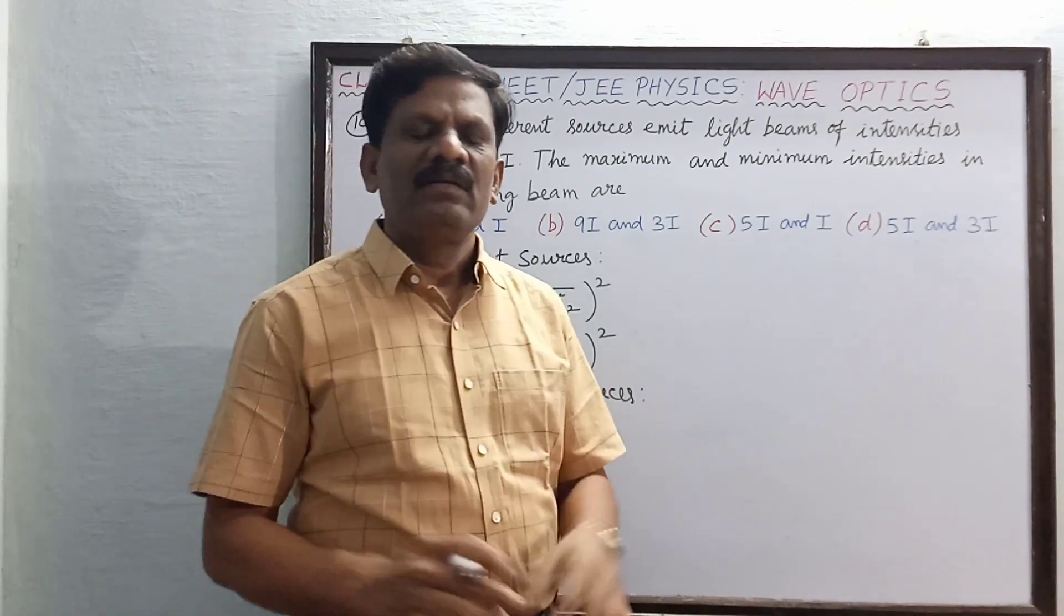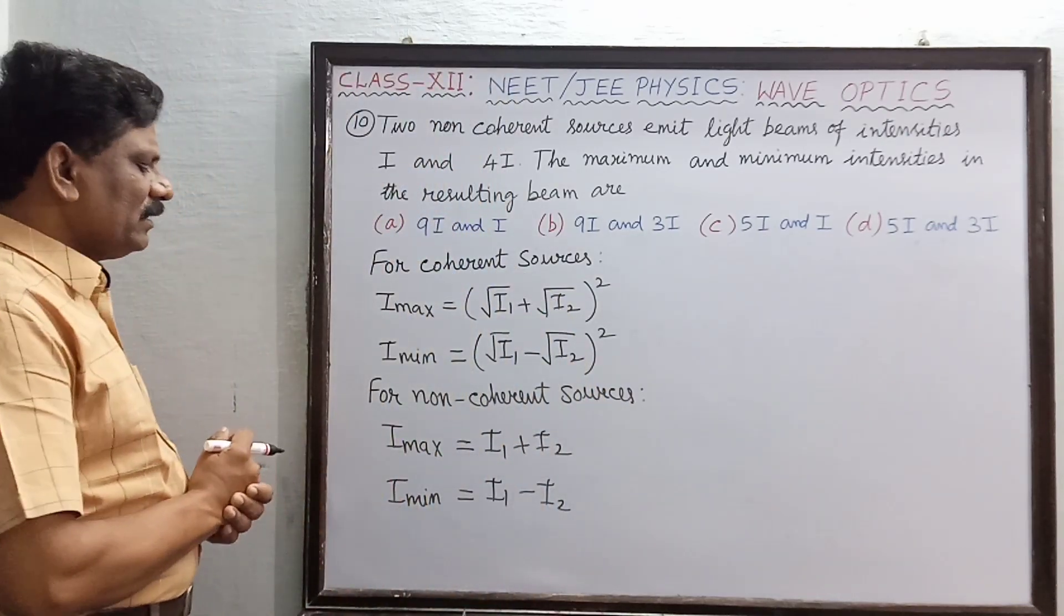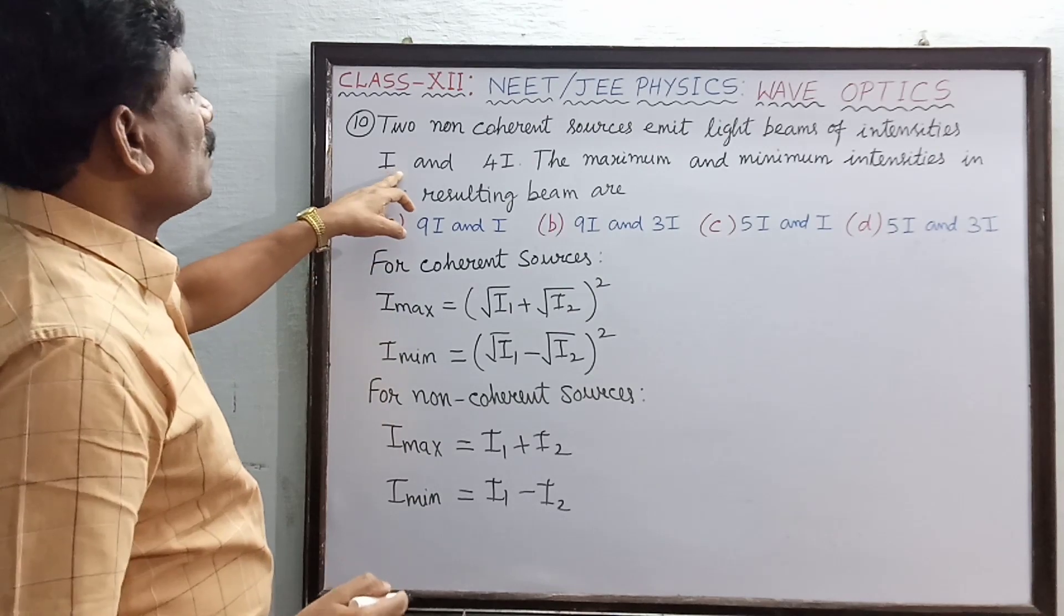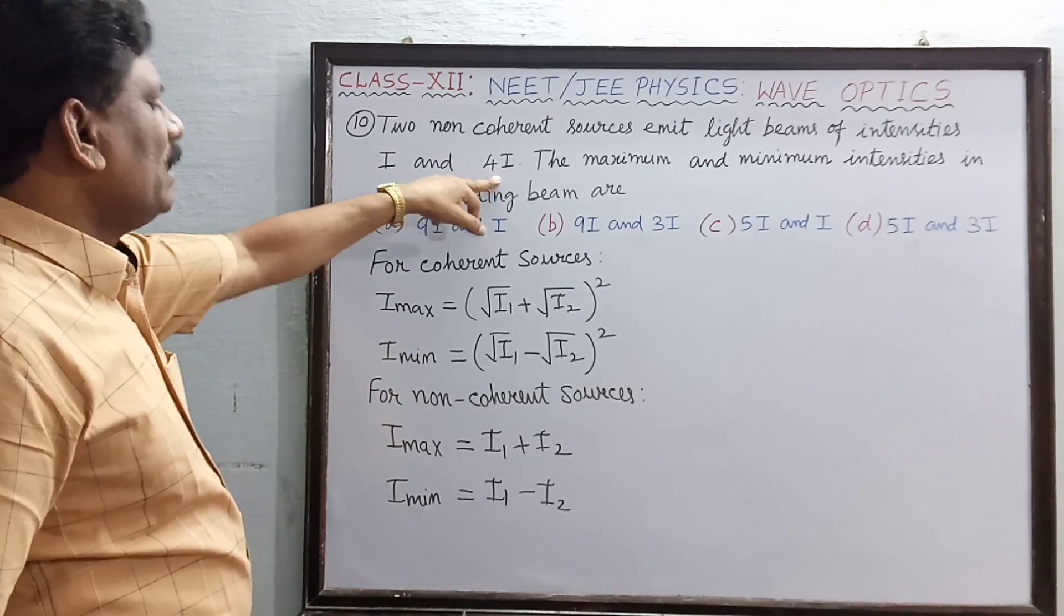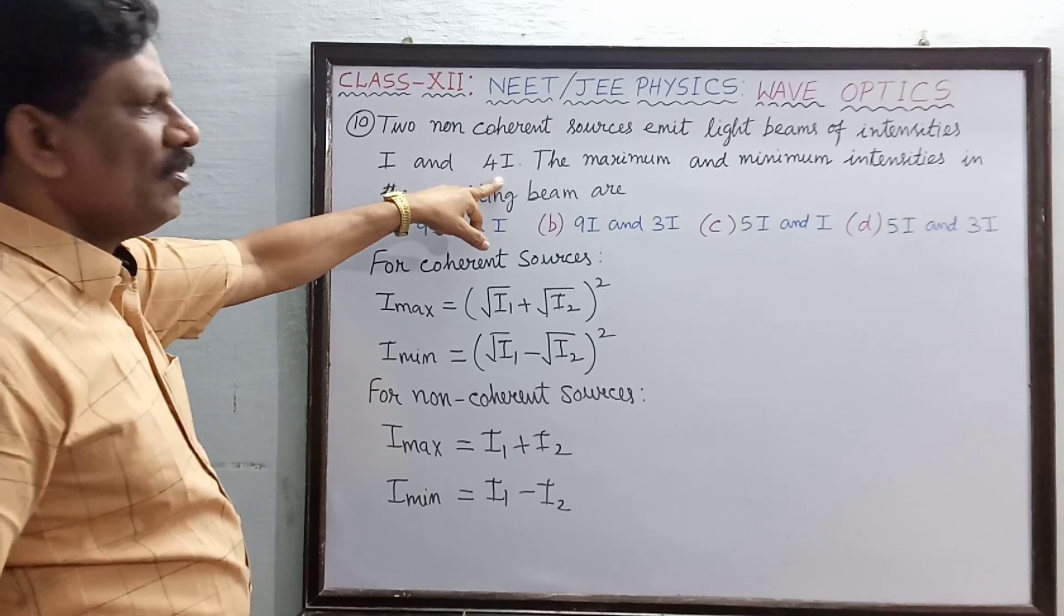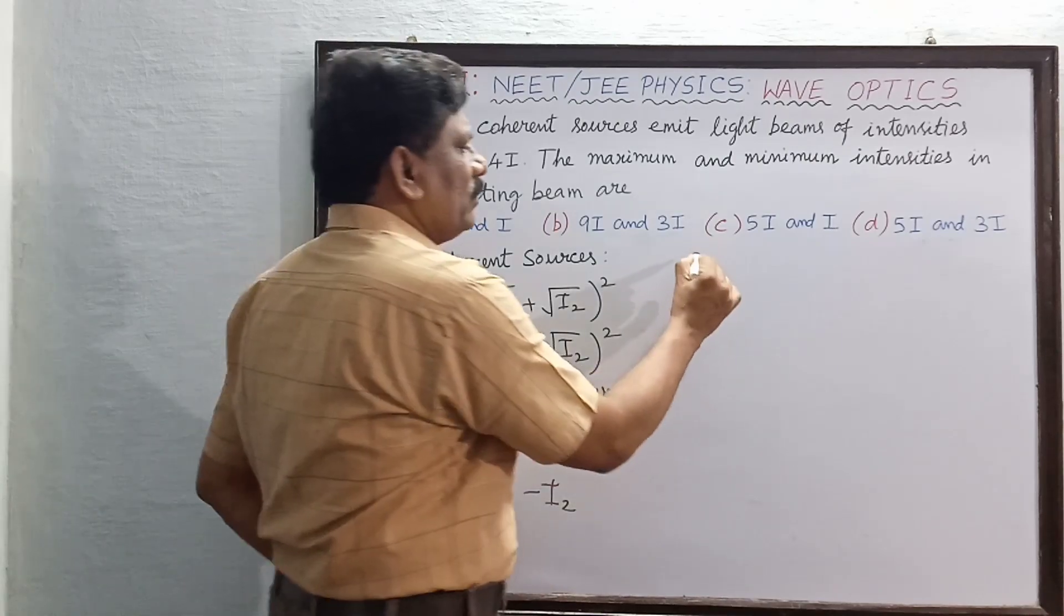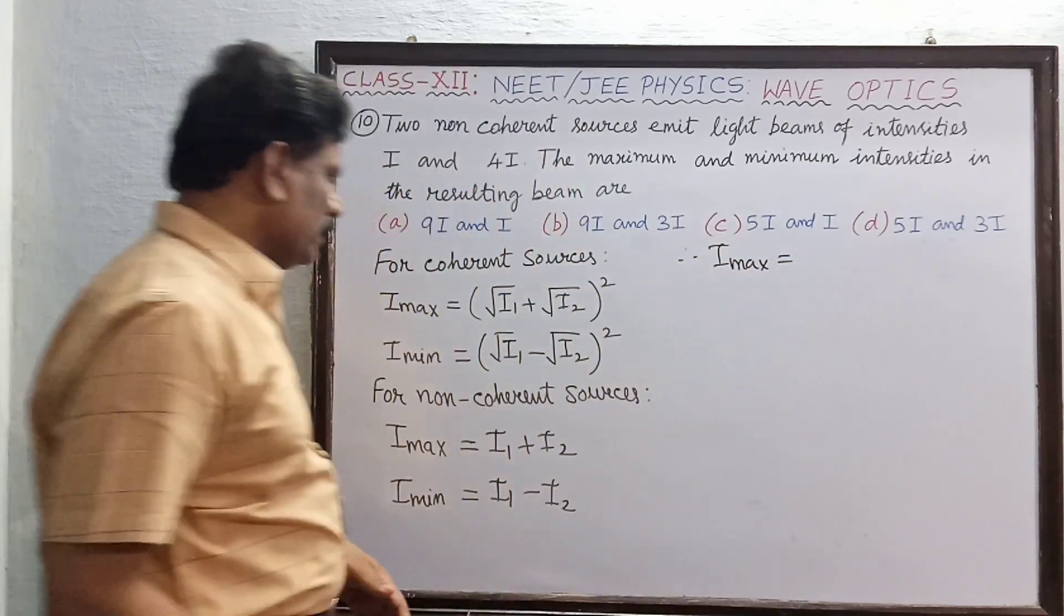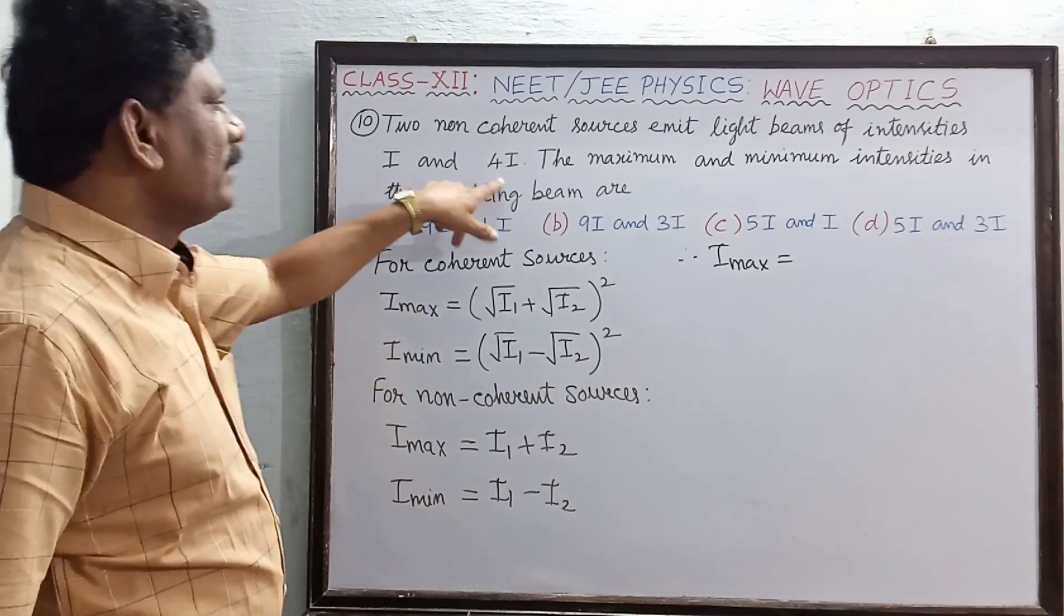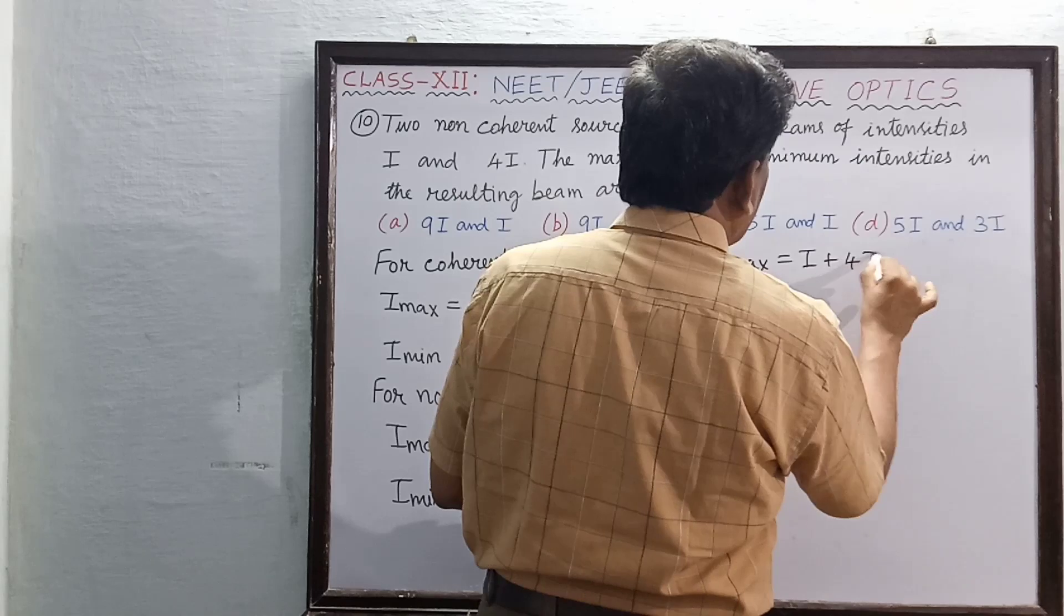Now you can see here, I1 is equal to I and I2 is equal to 4I, is it not? I am going to substitute now. Therefore, I maximum must be equal to I + 4I, so this is I + 4I, which is equal to 5I.